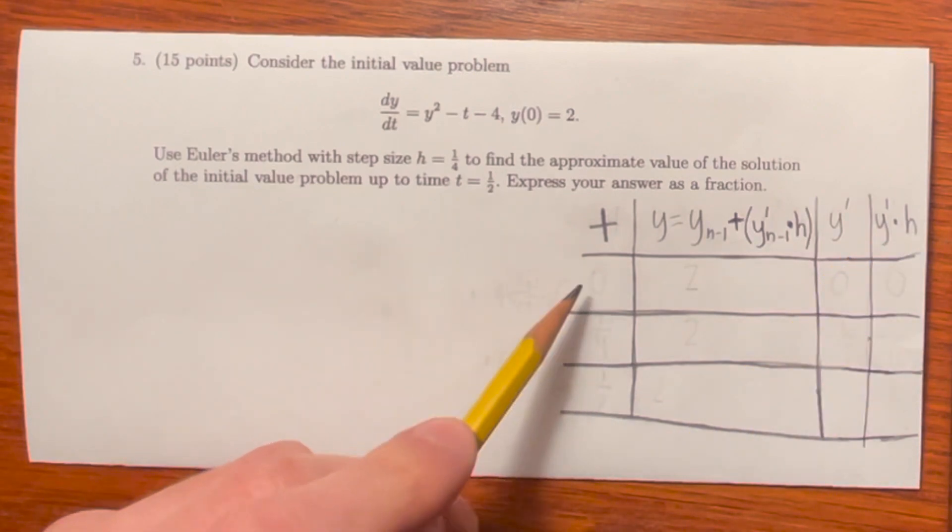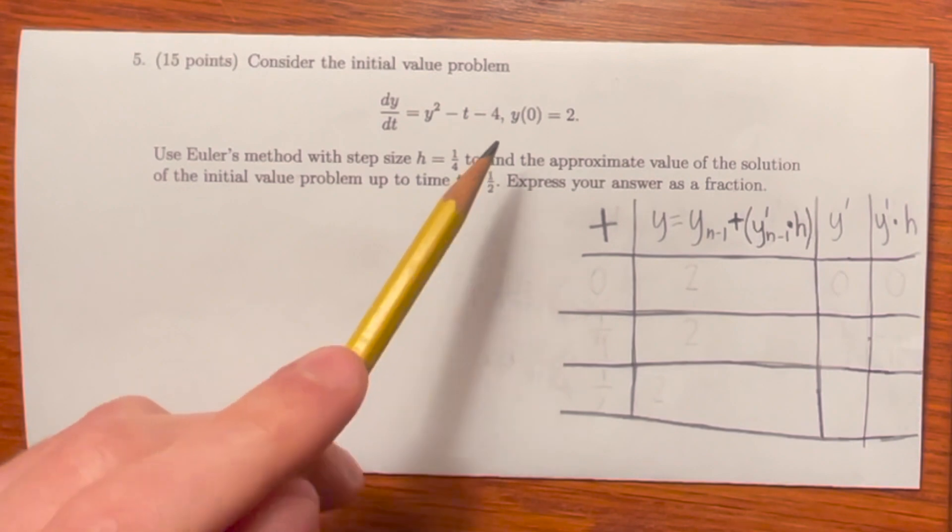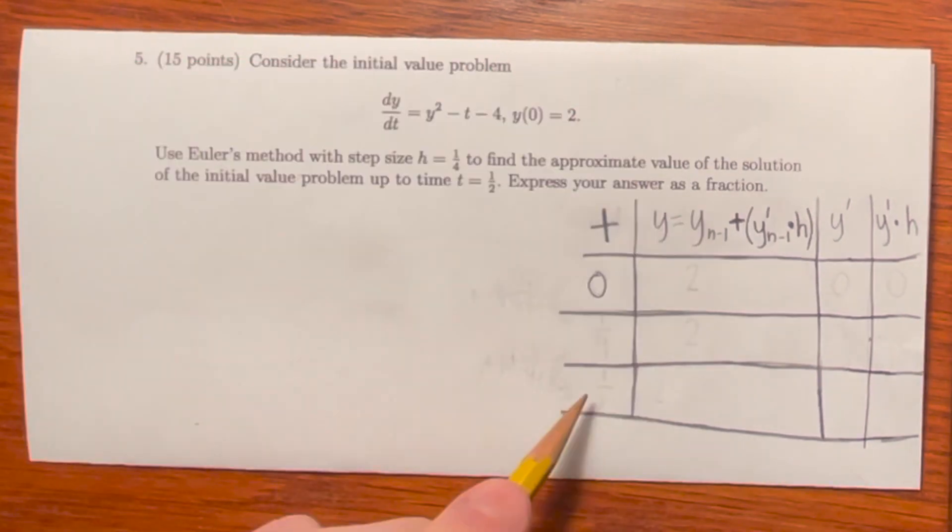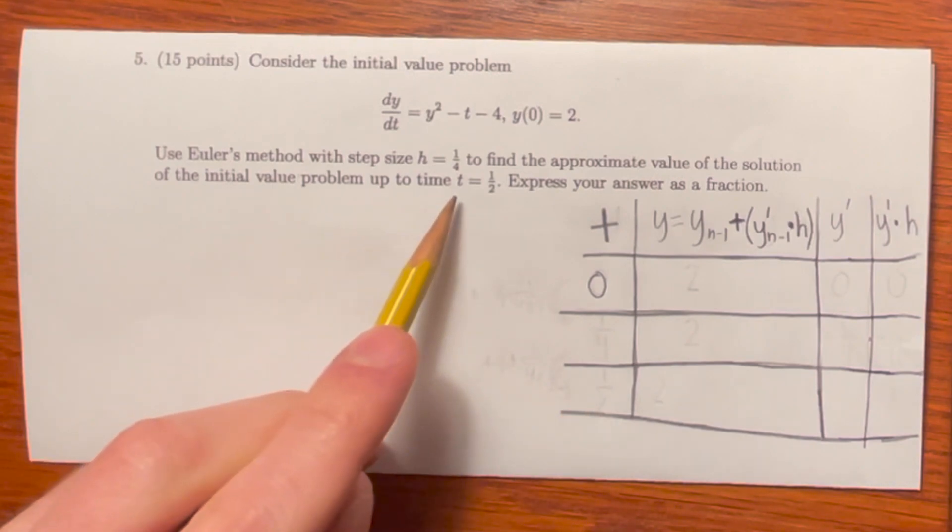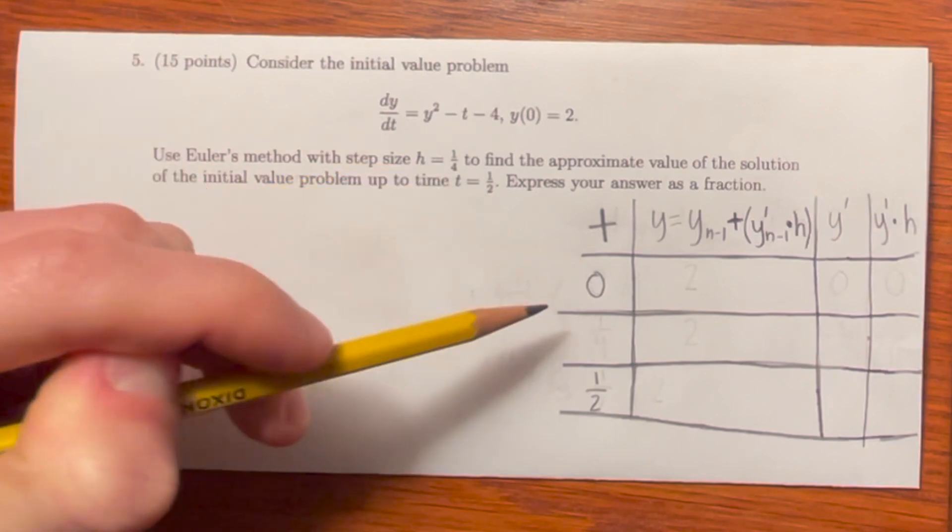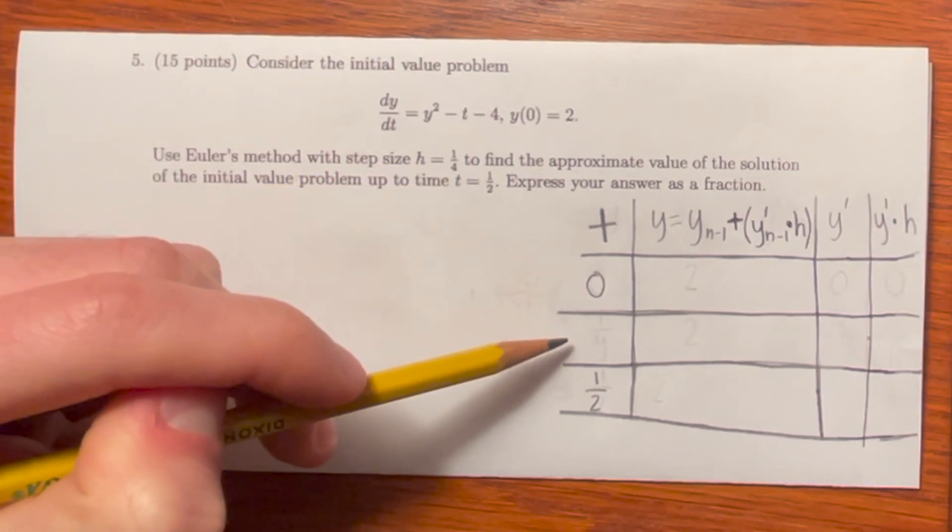Now the first t value is always given in the initial condition, y of 0 making t equal to 0. The last t value is the one that we want to go up to. We want to go up to t equals 1 half. We are given that the step size h is equal to 1 fourth. Every subsequent t increases by 1 fourth.